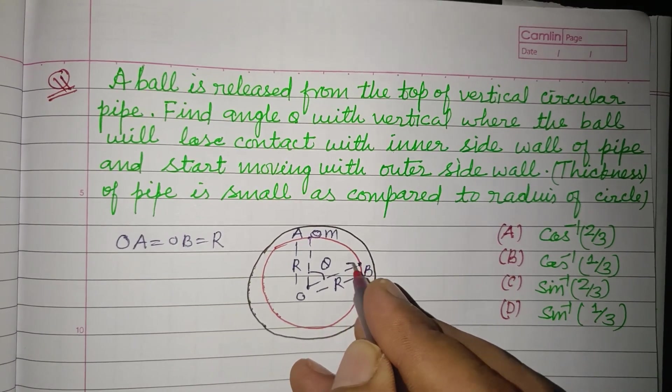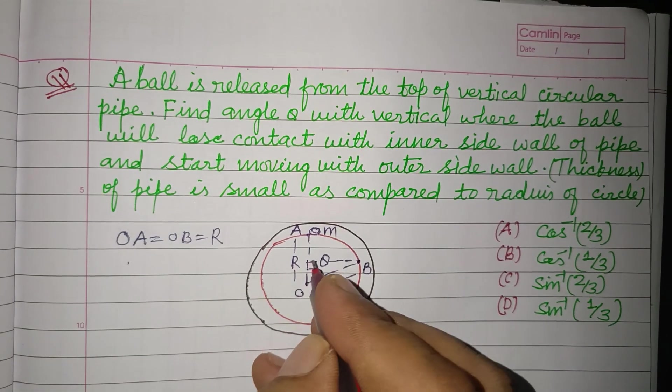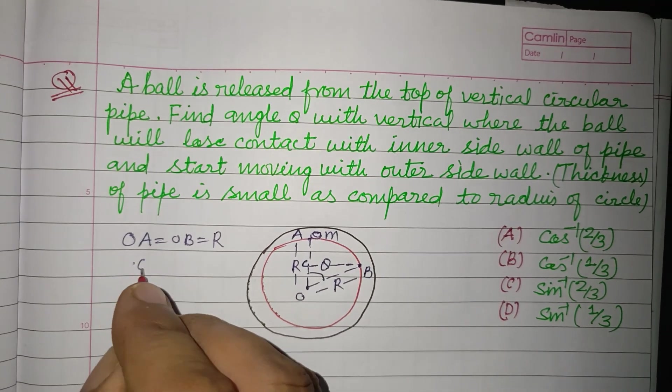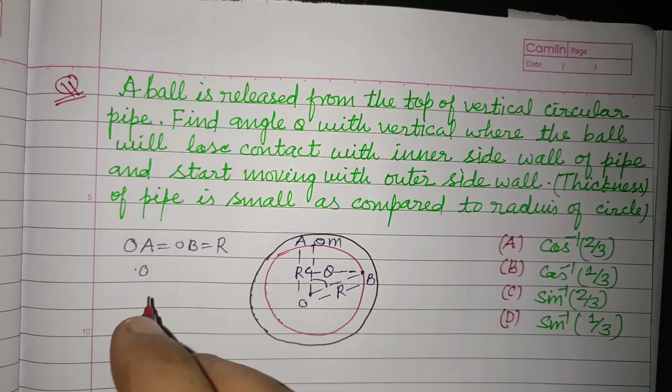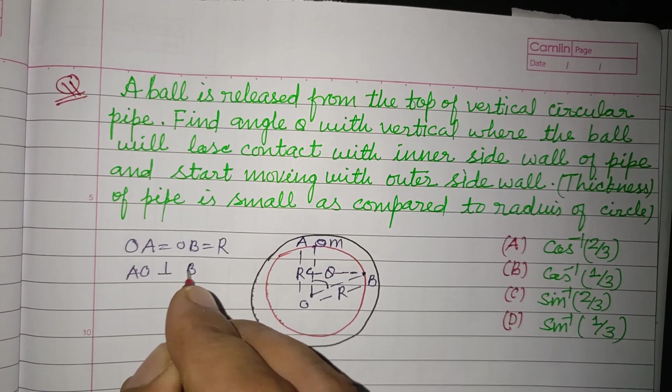Now we draw perpendicular from B to OA. In triangle OCB, this is C, so OA is perpendicular to BC.